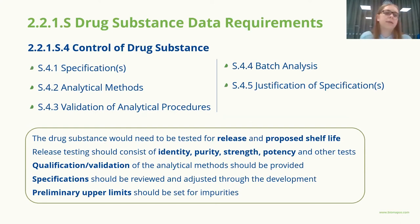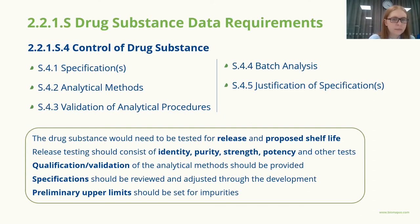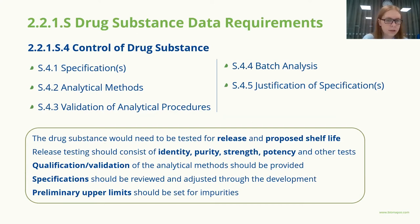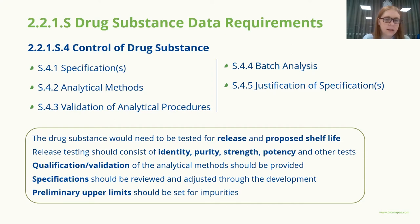In the fourth section of the drug substance part, a drug substance specification should be indicated with relevant test methods and acceptance criteria. The specification should include tests for identity, purity, strength, and potency, among others. If any quality parameter is not included, it should also be justified.